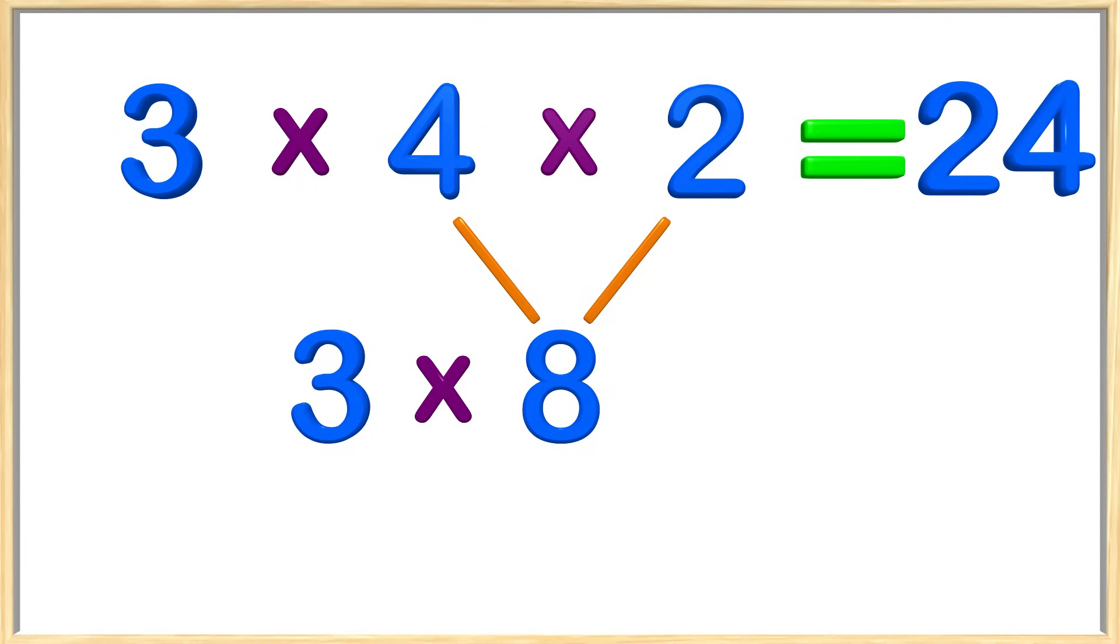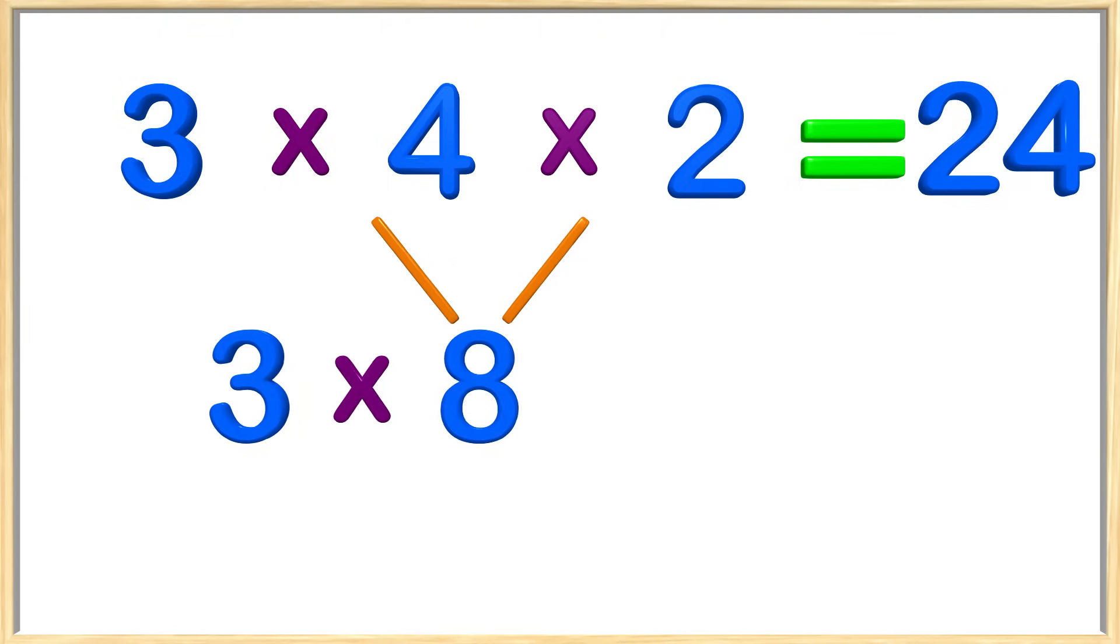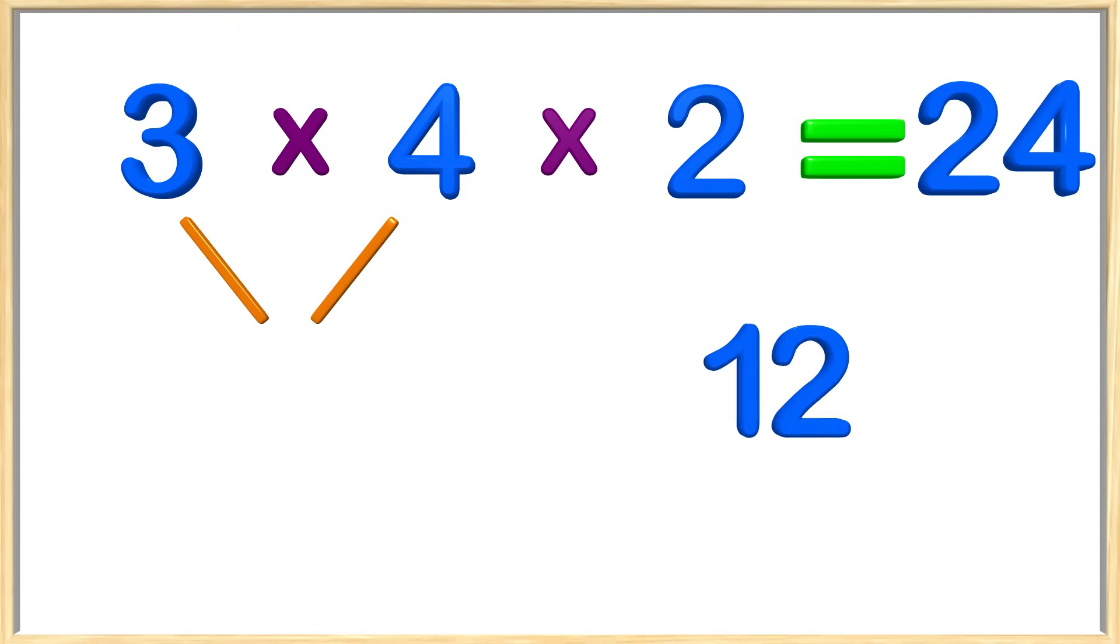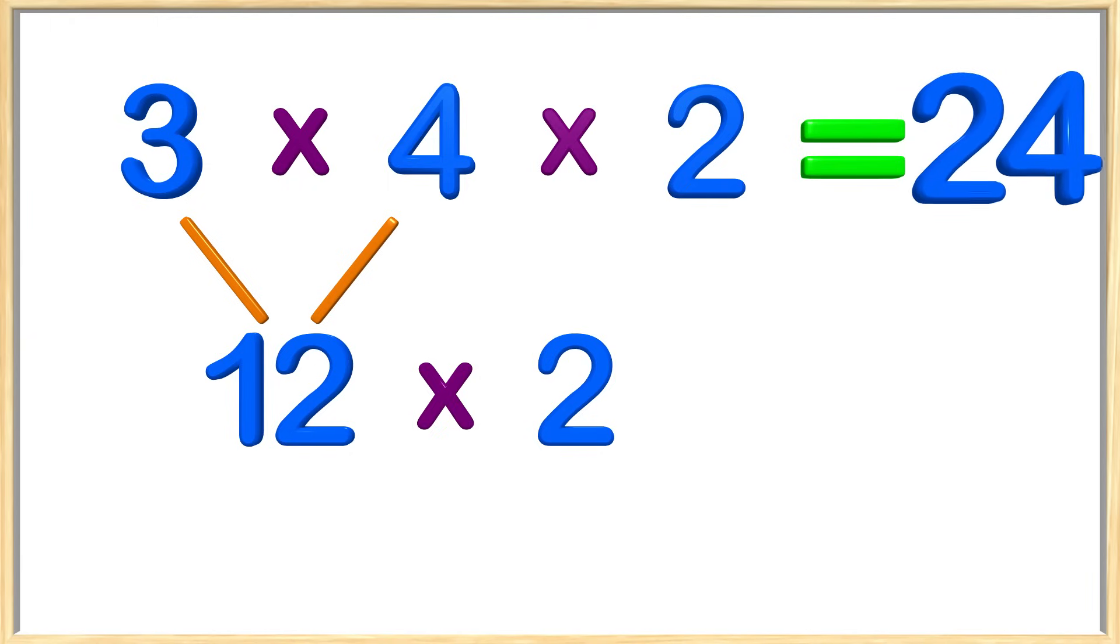But now I want to try the other way, so let's clear the board. We will start with three multiplied by four, which gives us twelve. Now all we have left to do is multiply twelve by two. Twelve times two is twenty-four. We got the same answer regardless of which numbers we started multiplying together. This is awesome!